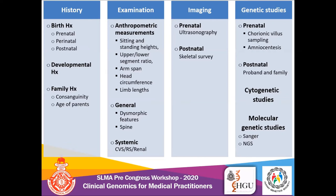These measurements are plotted in charts to answer three basic questions: first, what is the type of short stature — proportional or disproportional? If it is disproportionate, whether it is short limb or short trunk. If short limb, what is the position of limb shortening — whether rhizomelic (proximal segment shortening), mesomelic (middle segment shortening), or acromelic (distal segment shortening). This analysis is really important to narrow down the diagnosis. Careful general examination is also done to detect dysmorphic features, especially craniofacial features and spinal abnormalities.